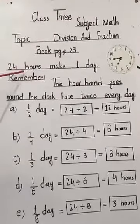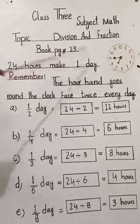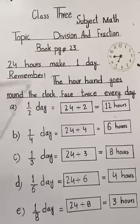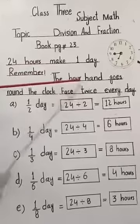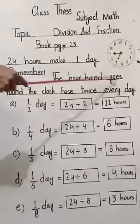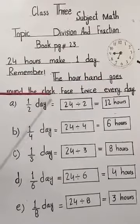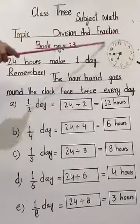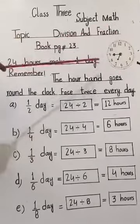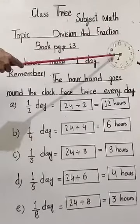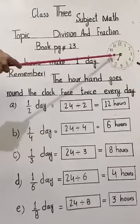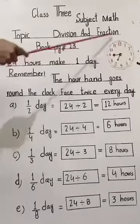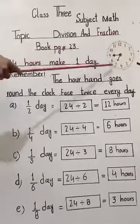24 hours make one day. Remember, the hour hand goes round the clock face twice every day. You can see here clock shape. This one big hand, it will move two times around this clock. Then one day will complete.